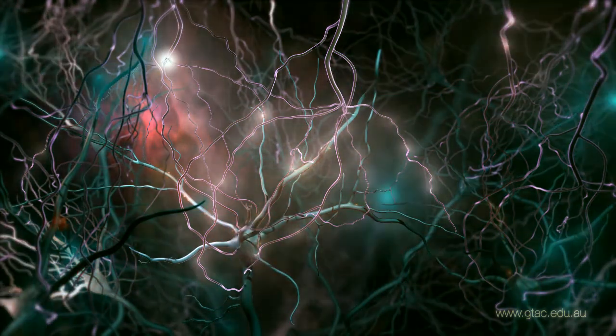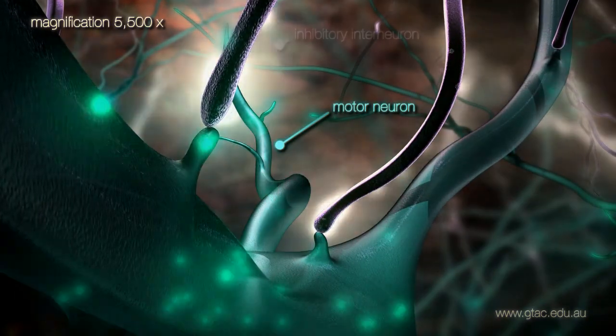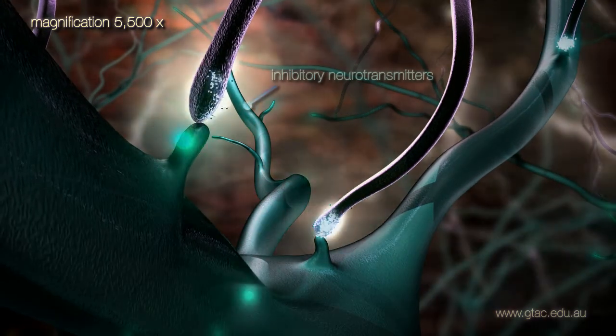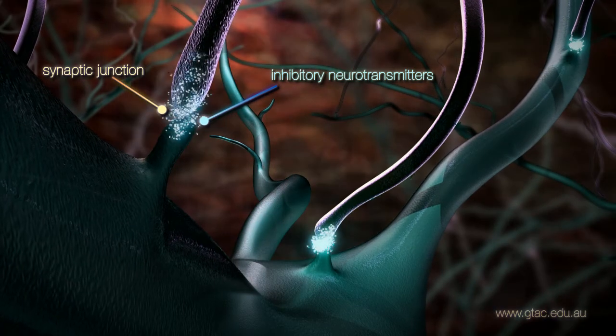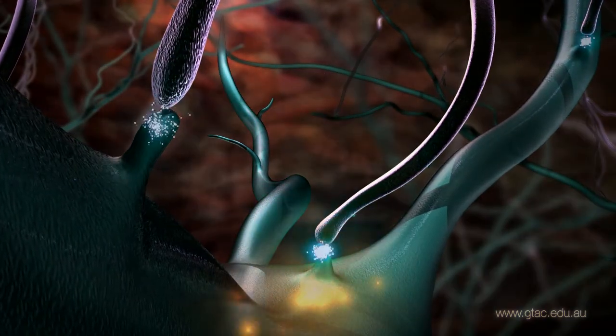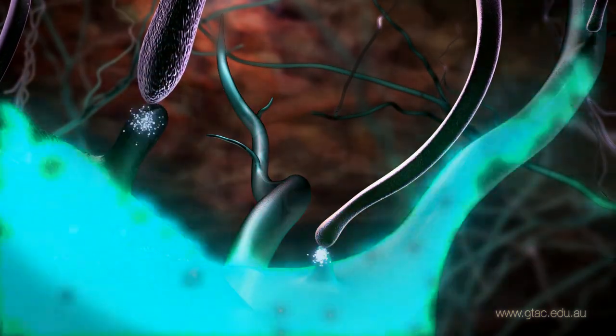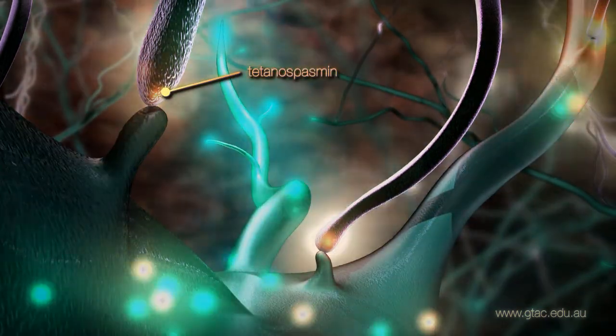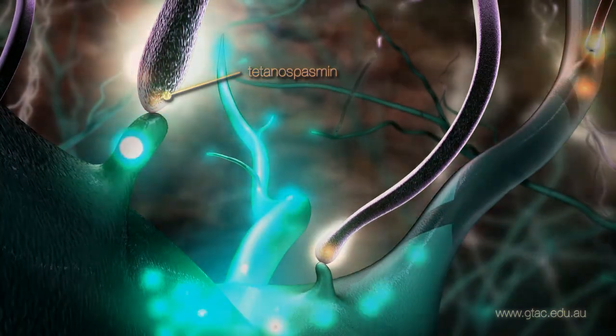To see how the toxin exerts its effect, we will zoom in on a synapse between a motor neuron and an inhibitory interneuron. The interneurons release inhibitory neurotransmitters into the synaptic junction. This prevents the firing of motor neurons so that the muscle fibers they control do not constantly contract. Tetanospasmin toxin moves out of the motor neuron across the synapse into the inhibitory interneuron. The toxin prevents the release of inhibitory neurotransmitters from the interneuron.